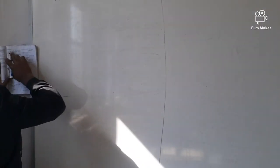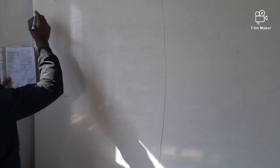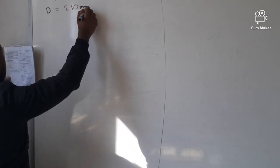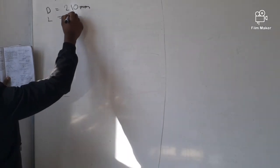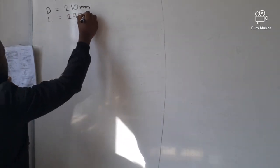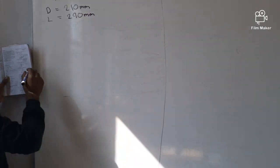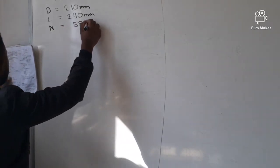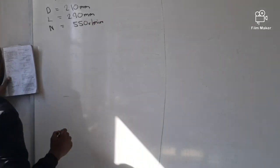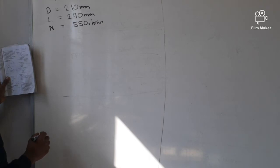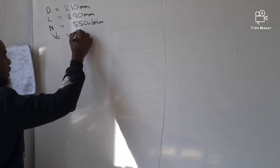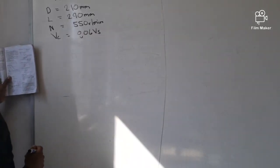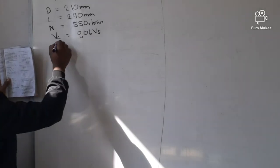The given information: single-acting reciprocating compressor with diameter D = 210 millimeters, stroke length = 290 millimeters, and speed N = 550 RPM. The clearance volume is 6% of the swept volume, so we use Vc = 0.06 × Vs. The polytropic index N is given as 1.35.